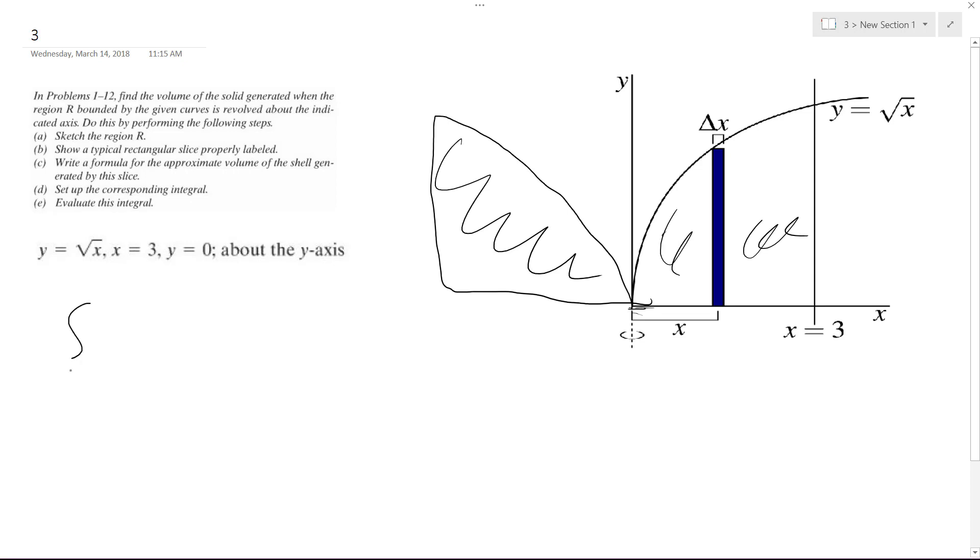So we're going to integrate from 0 to 3, using shells, it's 2πx, and then dx. What we're going to have here is the square root of x, and then dx.